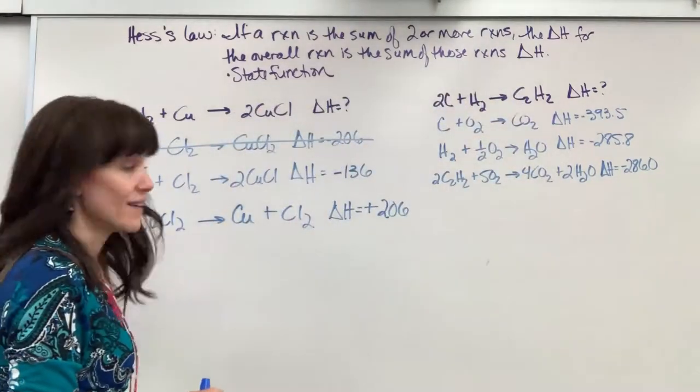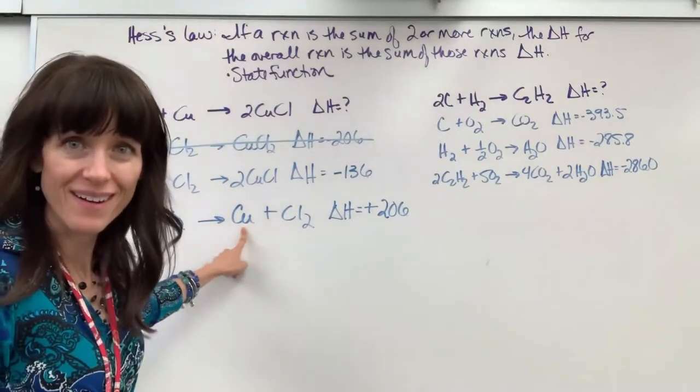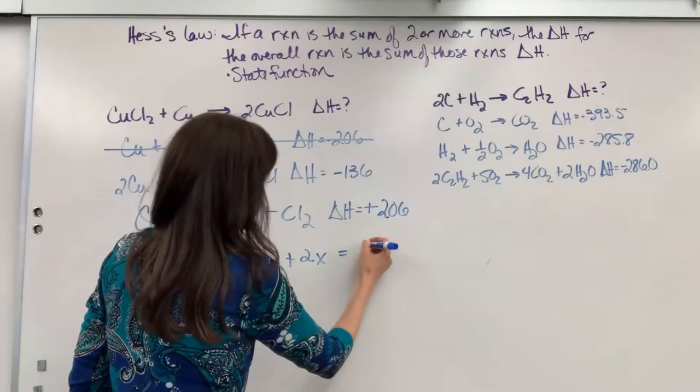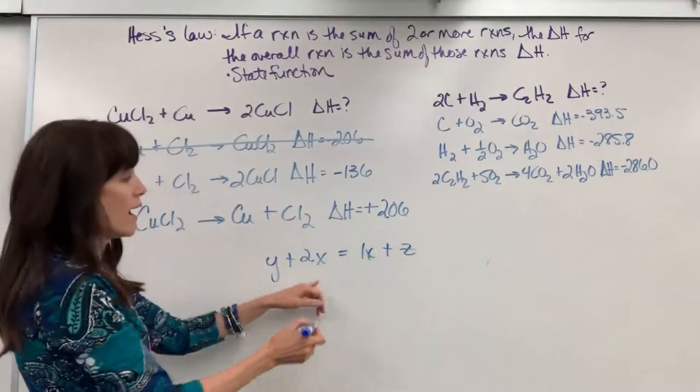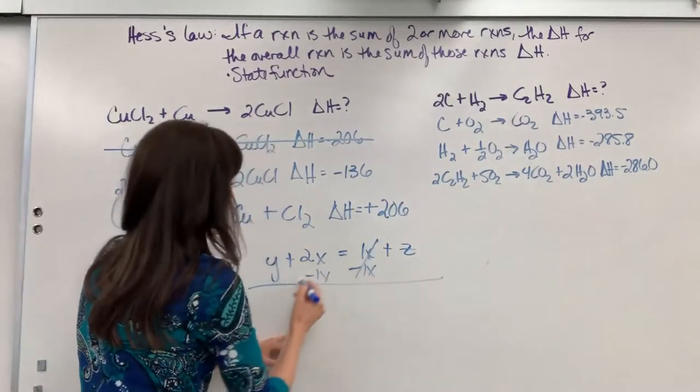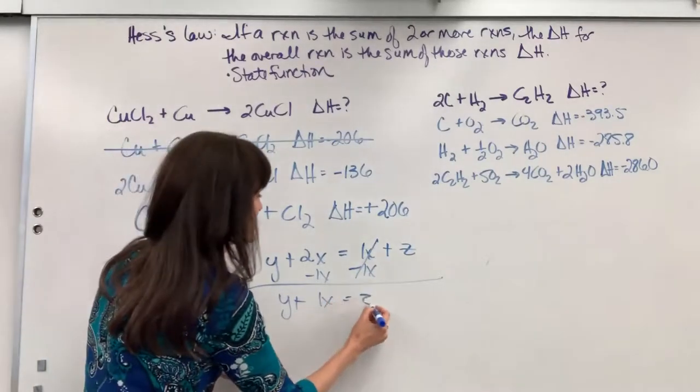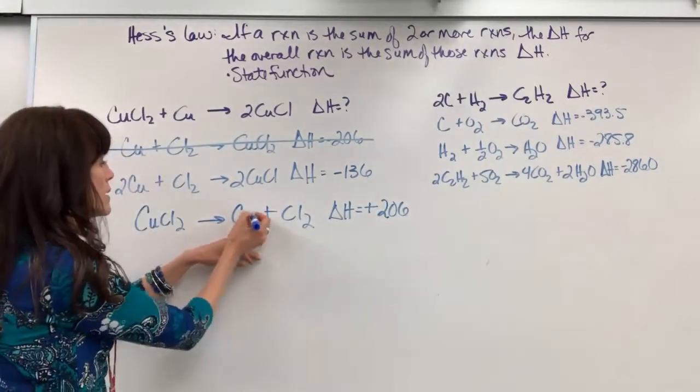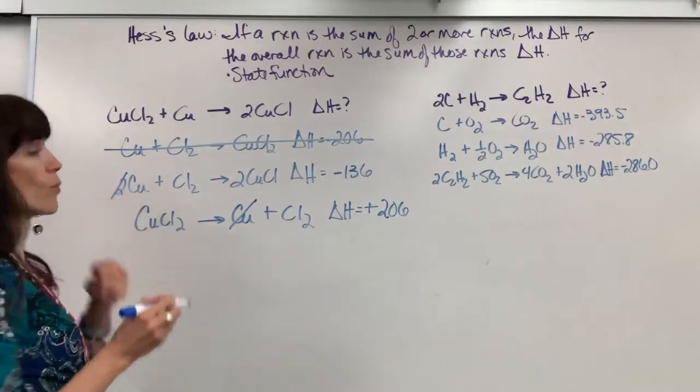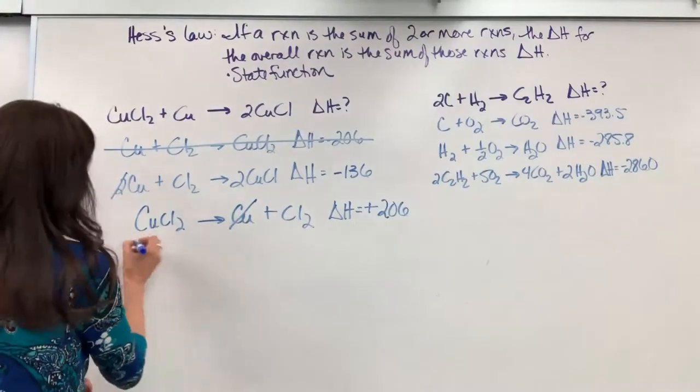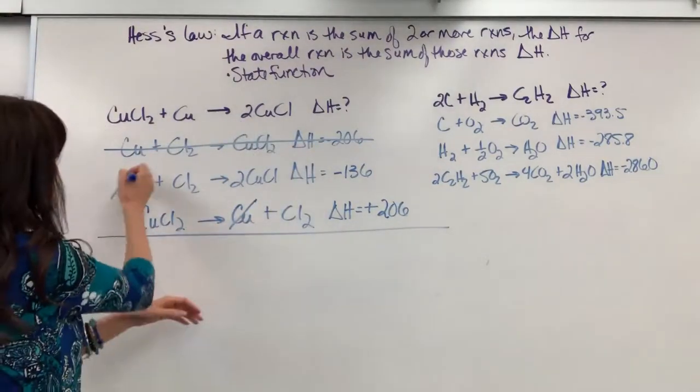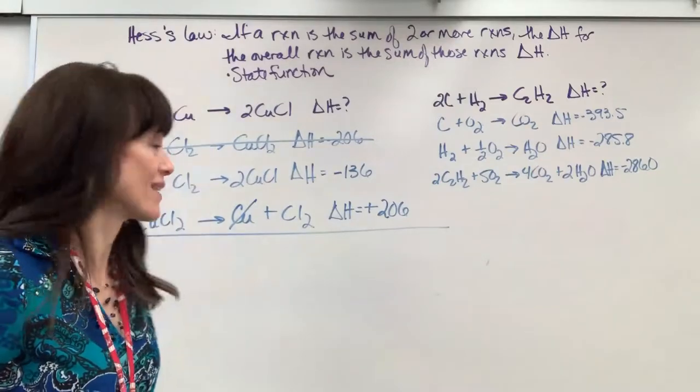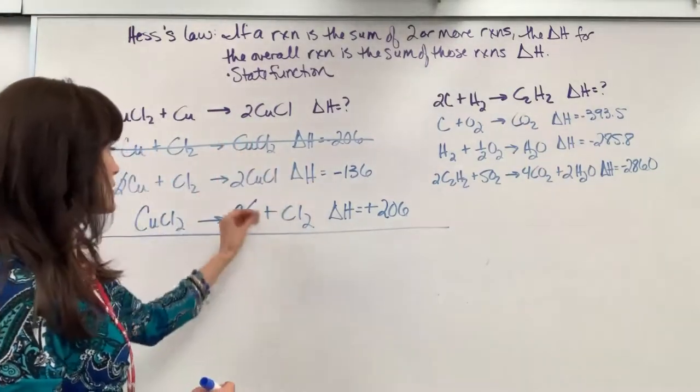So I've got two coppers on the reactant side and one copper on the product side. Think about this. If I had Y plus 2X equals 1X plus C, I could subtract 1X from both sides. And you get Y plus 1X equals Z. It's the same principle. These, I can just subtract. So this one copper is going to subtract from that two and leave one copper right there. Now we're going to add everything together.